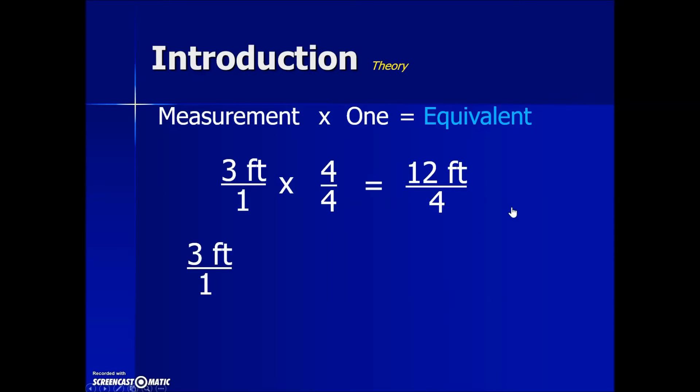But if we want to convert our 3 feet into say inches, and we know that there are 12 inches in 1 foot, we can arrange those equivalent values, 12 inches and 1 foot, into a fraction similar to the 4 over 4, which is equal to 1. 12 inches, since it's equal to 1 foot, this results in a value of 1. It's called a conversion factor fraction which is equal to 1.